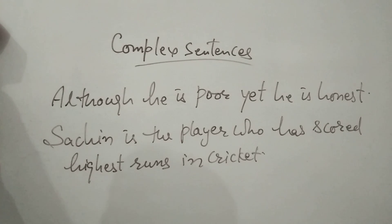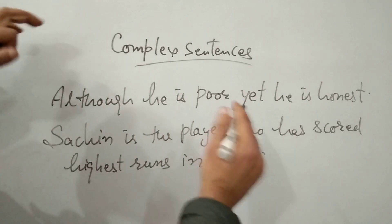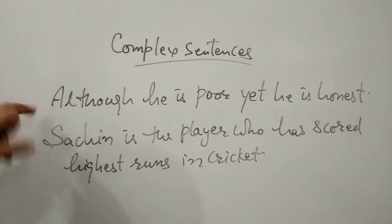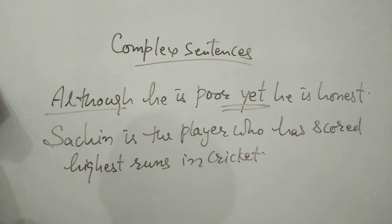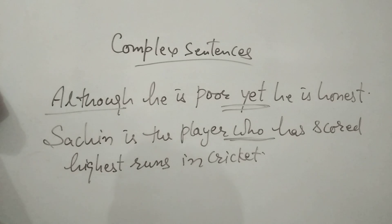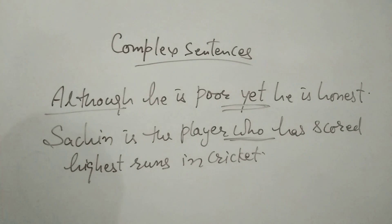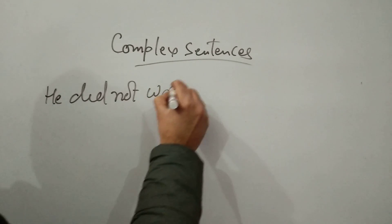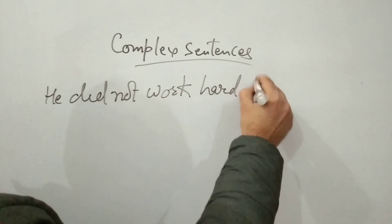For example: 'Although he is poor, yet he is honest.' Here 'although' and 'yet' are used to show contrast — this is a complex sentence. Another example in context: 'Although the government is working hard to provide jobs to poor people, yet it is not successful.' Another example: 'He did not work hard; therefore he could not get the desired score.' These illustrate how linking words create complex sentences.